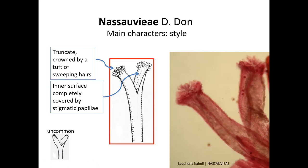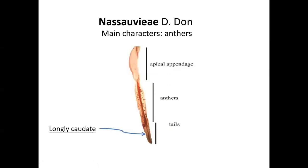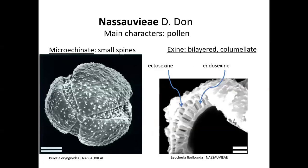Different from the tribes in the upper part of the family tree that have the usual two lines of stigmatic papillae. The anthers are prolonged in an apical appendage and have two long tails — they are longly caudate. The pollen grains are microechinate, meaning they have very short, small spines on the surface.